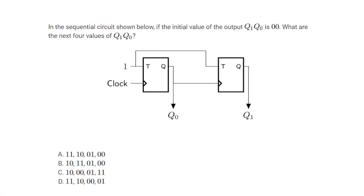In the sequential circuit shown below, if the initial value of output Q1, Q0 is 0, 0, what are the next four values of Q1, Q0? You can have a look at these four options.